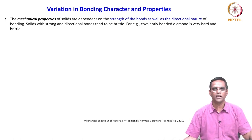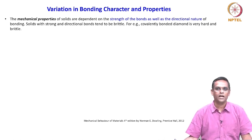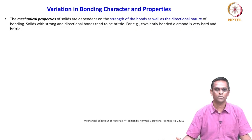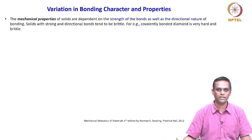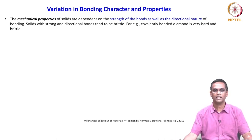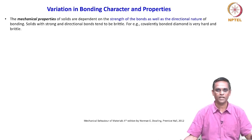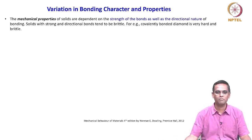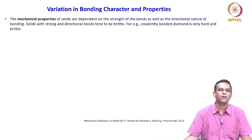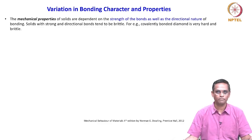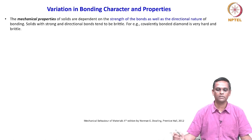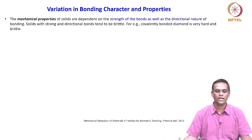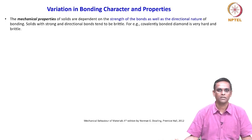Not all covalently bonded materials will be hard — there is another requirement. Covalently bonded materials must also have uniform surroundings, as in the case of diamond where all neighboring atoms share the same covalent bond. In polymers, even though covalent bonds are present, the first line of resistance to external load is actually Van der Waals forces, not the covalent bond. So the response of polymer material is quite different from diamond, which is hard, strong, and brittle in fracture.